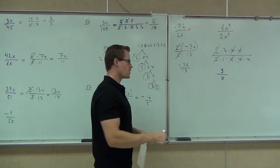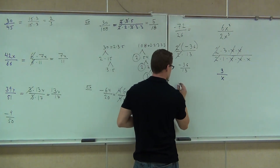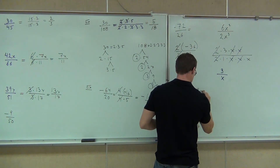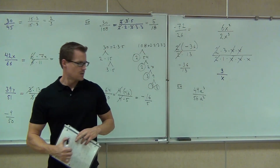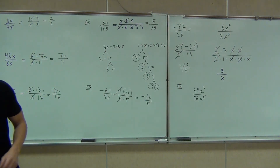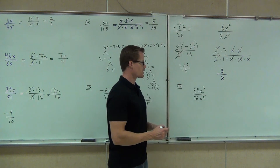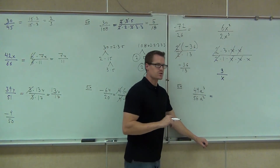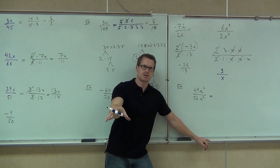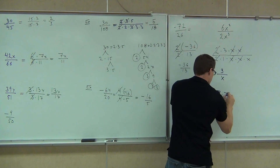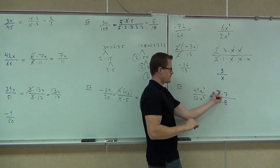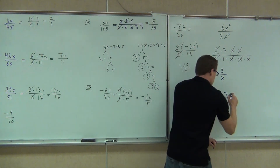Let's try one more. 49a cubed over 56a squared. First, we're looking to simplify the numbers — those numbers are being multiplied by the variables, which means we can simplify them. We're looking for a number that goes into both 49 and 56. 7. 7 times what for the top? 7. And 7 times? 8. That's 49 and 56. We have the same factor — now we're going to think about those a's: a cubed means a times a times a.